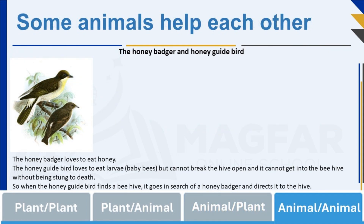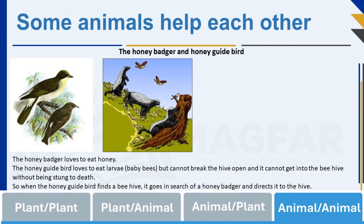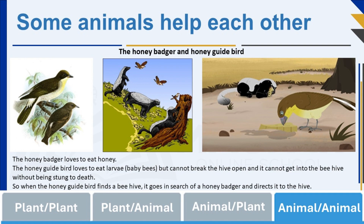Animals also depend on other animals for survival. The honey badger loves to eat honey. The honeyguide bird loves to eat bee larvae but cannot get into the beehive without being stung to death, and it cannot break the hive open. So when the honeyguide finds a beehive, it goes in search of a honey badger. The honey badger has thick skin that bee stings do not easily get through. The honeyguide convinces the honey badger to follow it to the beehive, where the badger uses its strong legs, claws, and teeth to break it open. After the badger has finished eating the honey, the honeyguide can enjoy all the bee larvae.